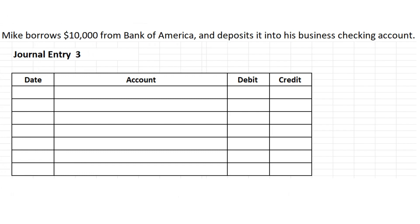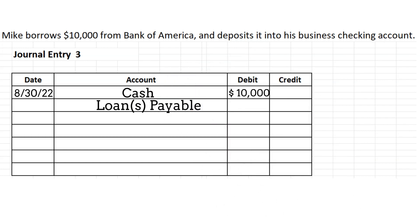In this example, Mike borrows $10,000 from Bank of America and deposits it into his business checking account — journal entry number three. The first account affected is cash. Since Mike is borrowing money and depositing it, cash is going up, so we debit it: $10,000 to the debit side. The next account affected is loans payable, recorded on the credit side for $10,000.